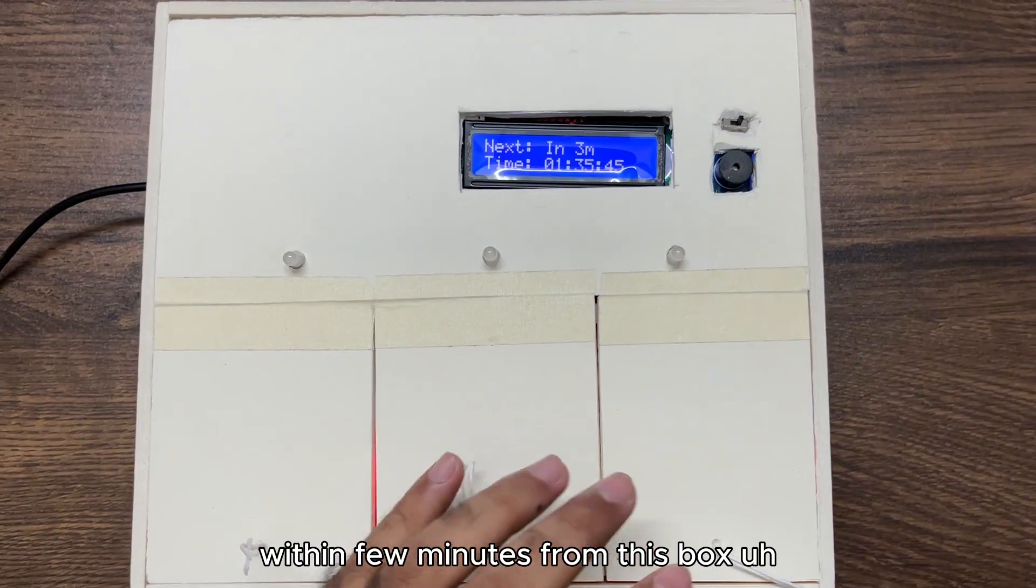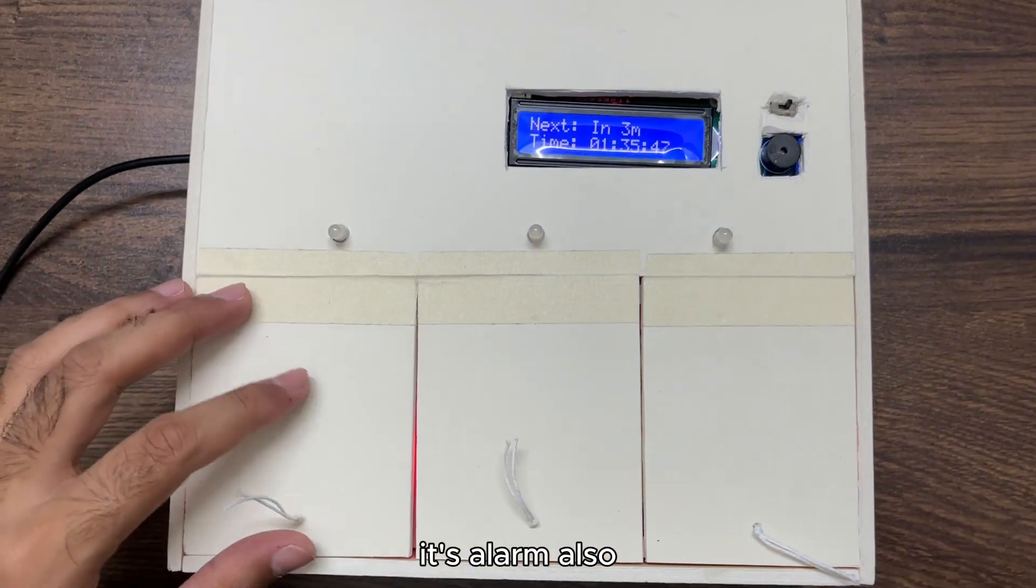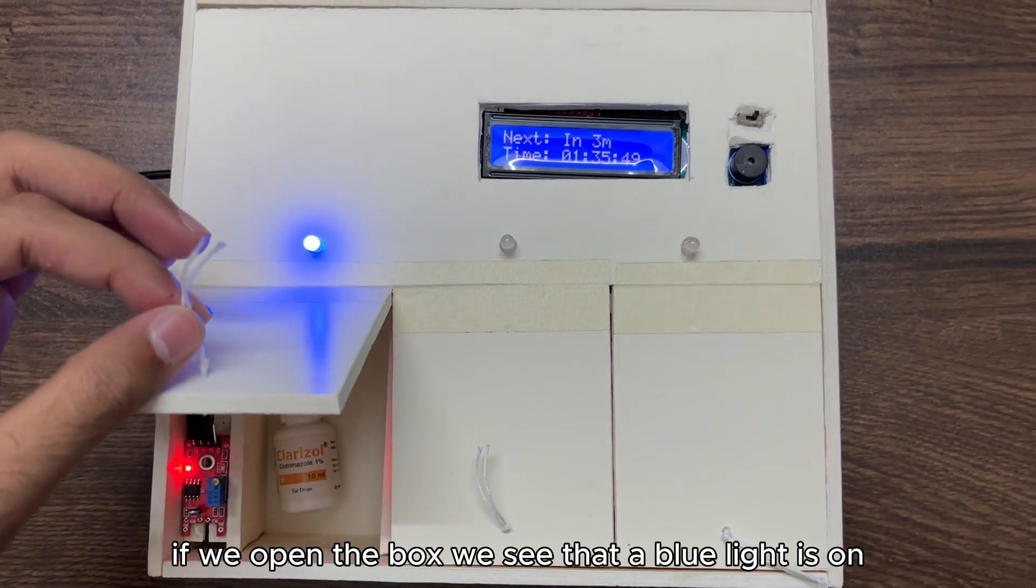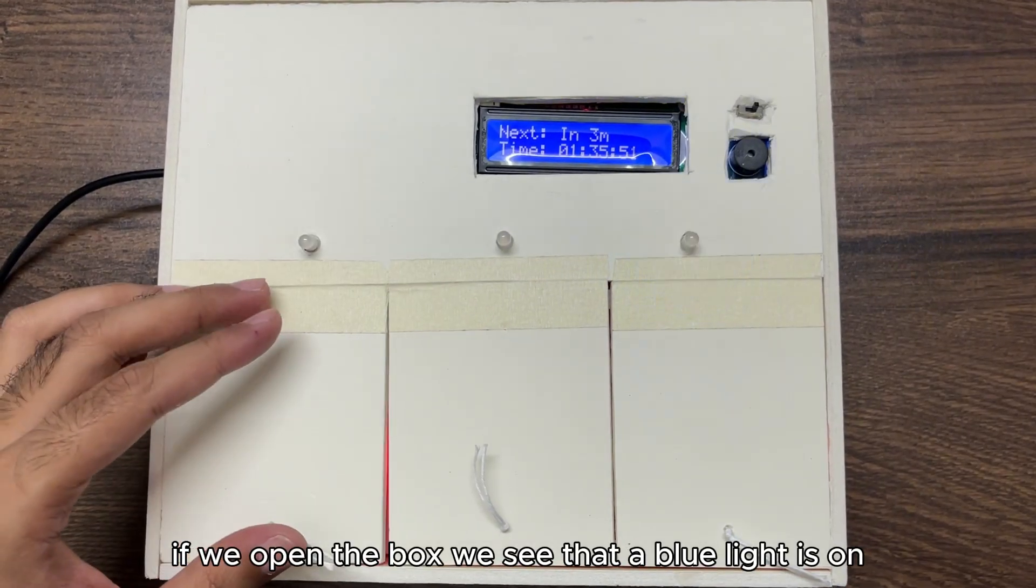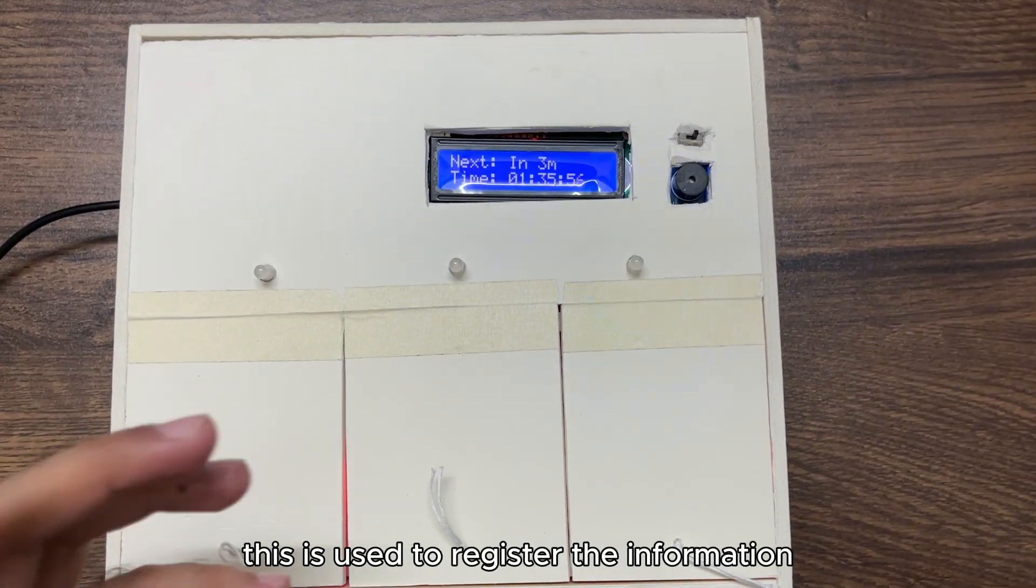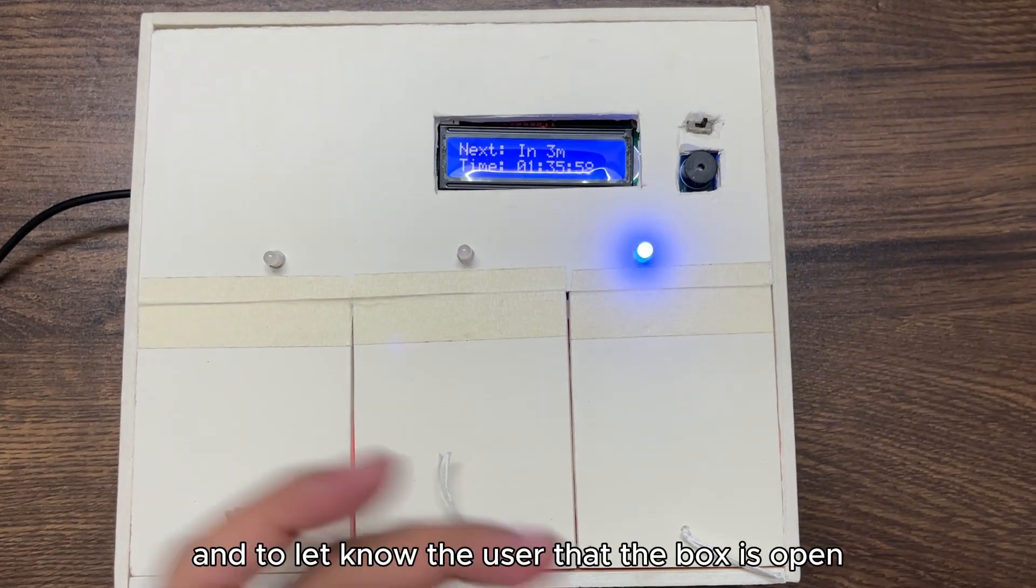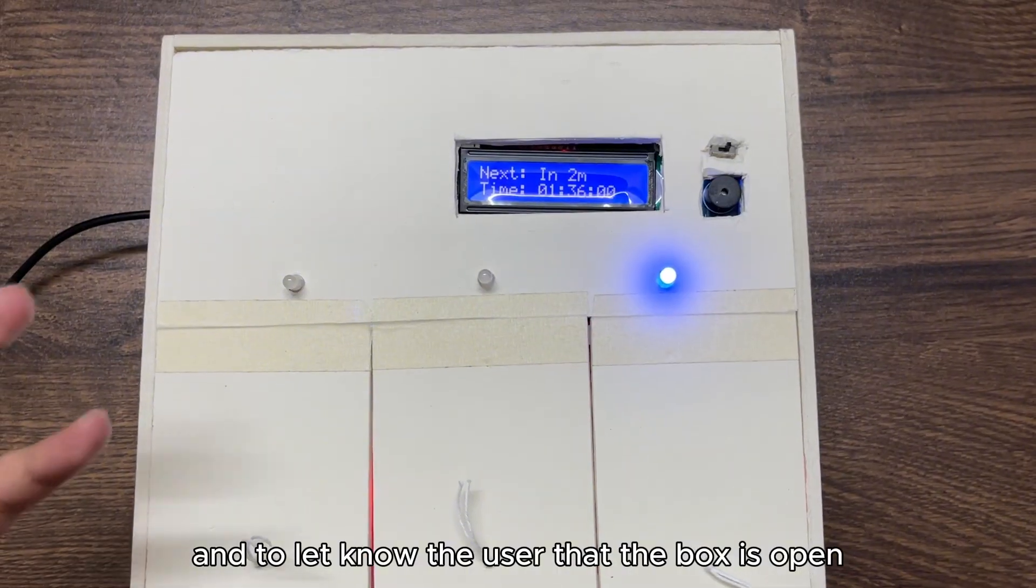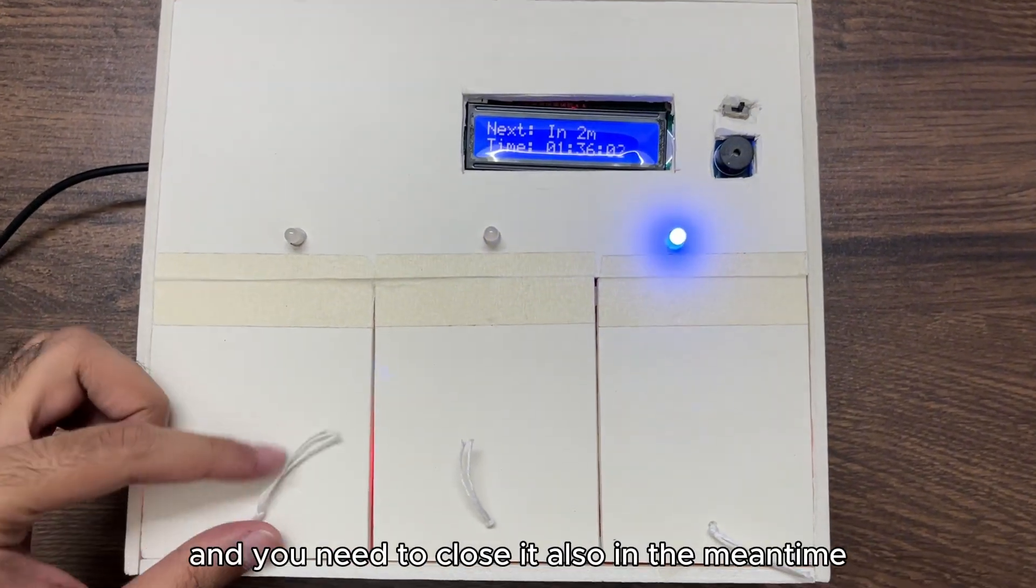If we open the box, we see that a blue light is on at the time when the lid is open. This shows that the box is open. This is used to register the information and to let the user know that the box is open and you need to close it.